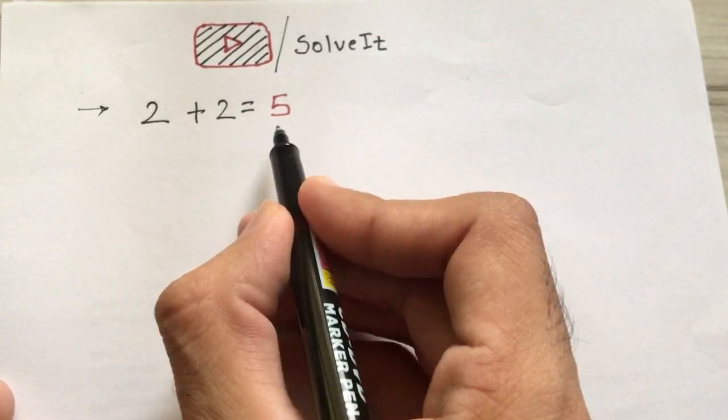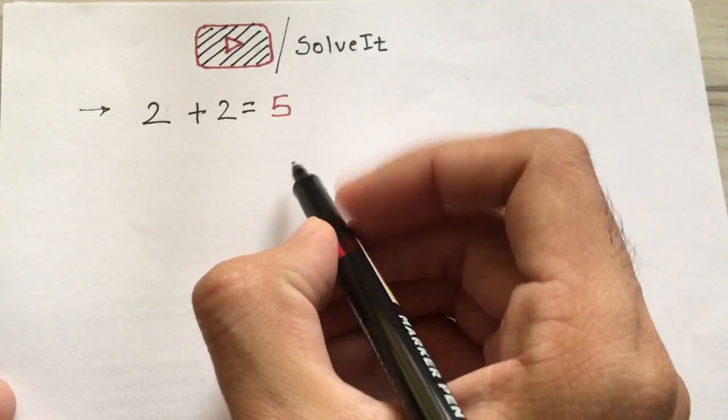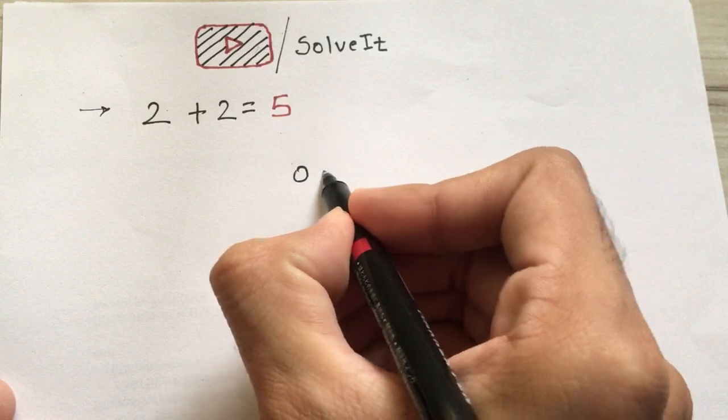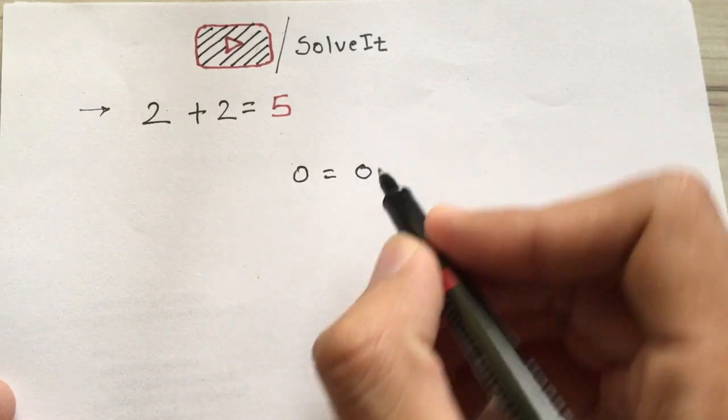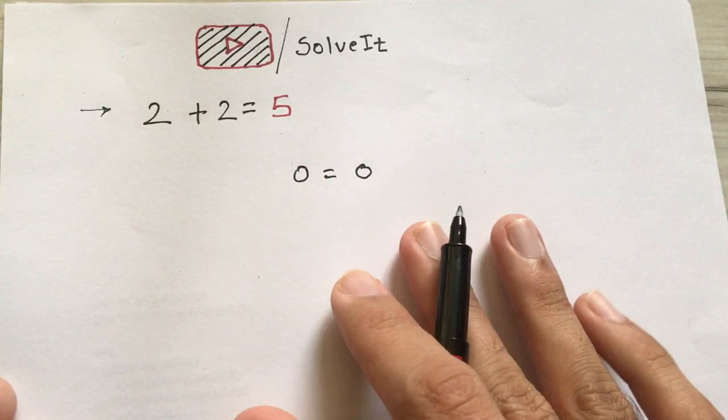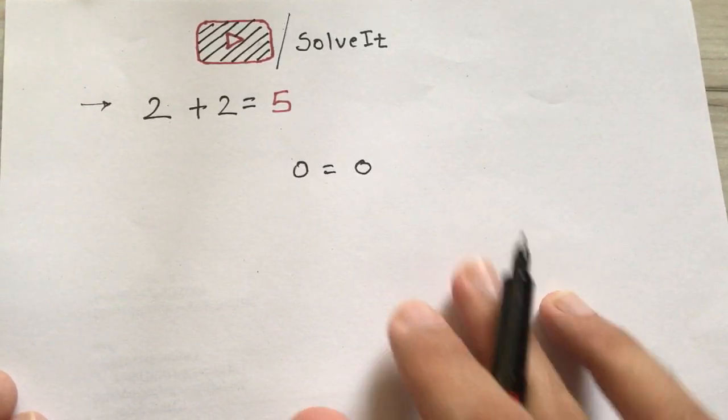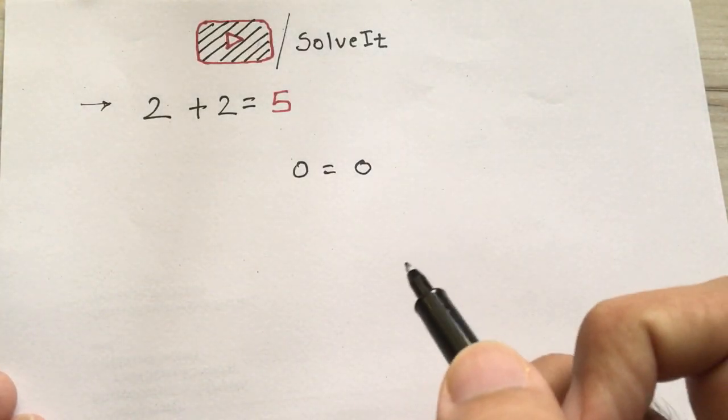Let's start. So 2 plus 2 equals 5. Let's start from the left-hand side. 0 equals 0. See, I haven't violated any of the rules in this step and in further steps, but there will be a mistake and you have to find it.